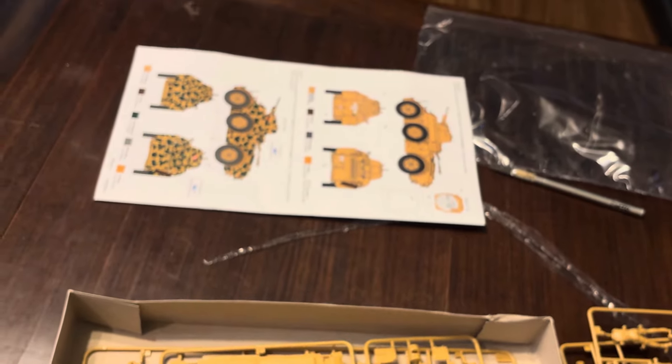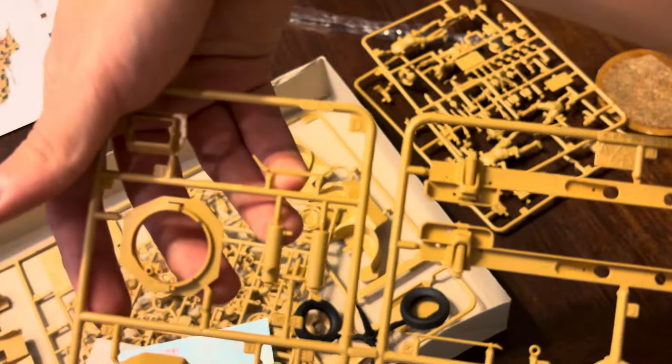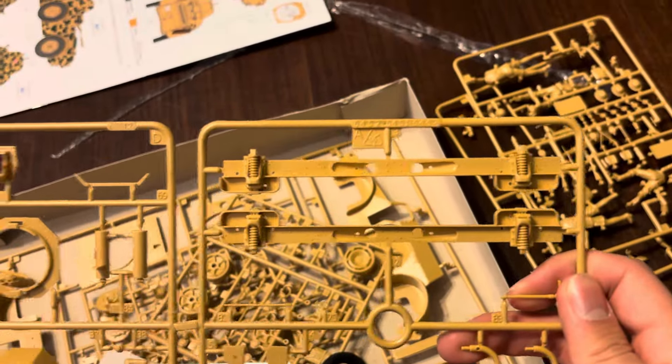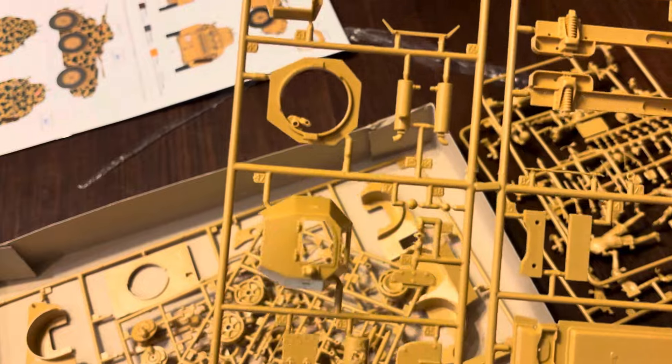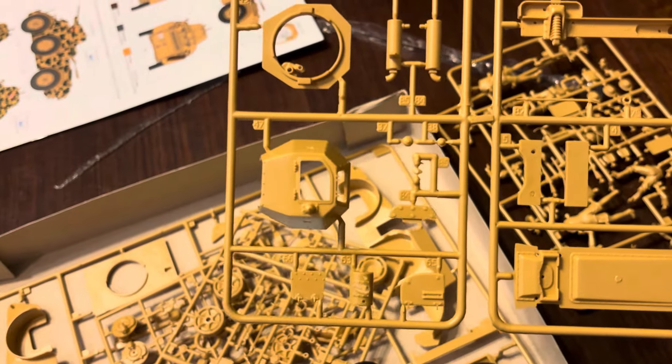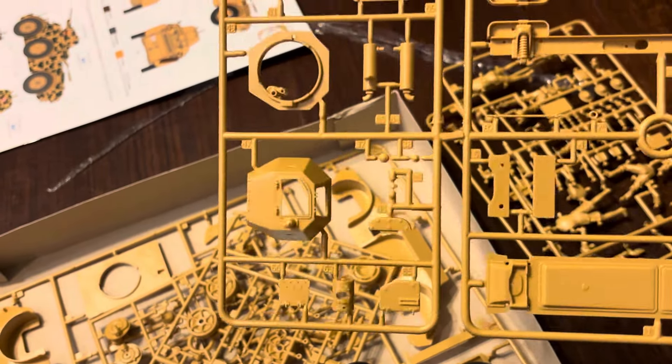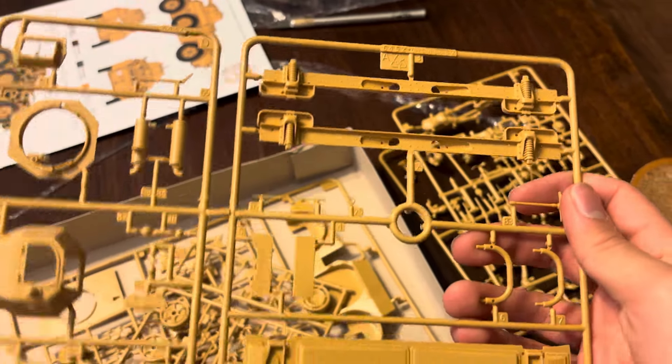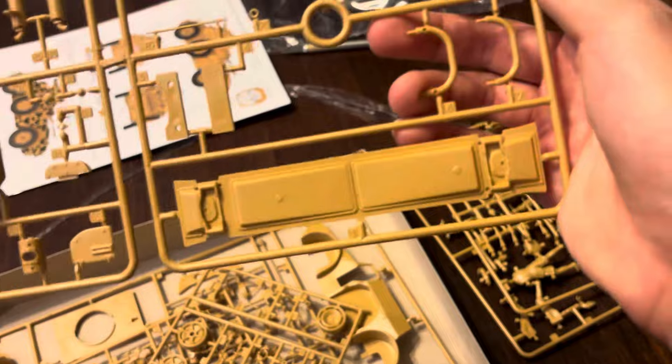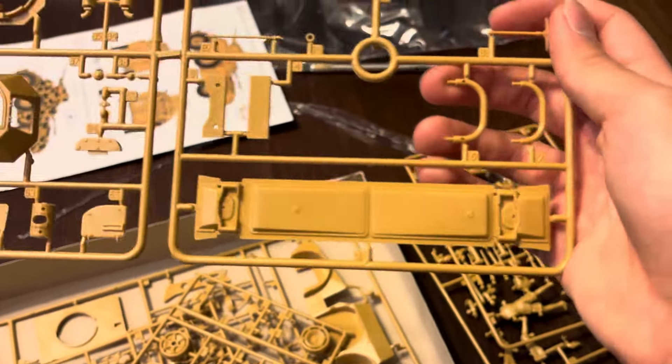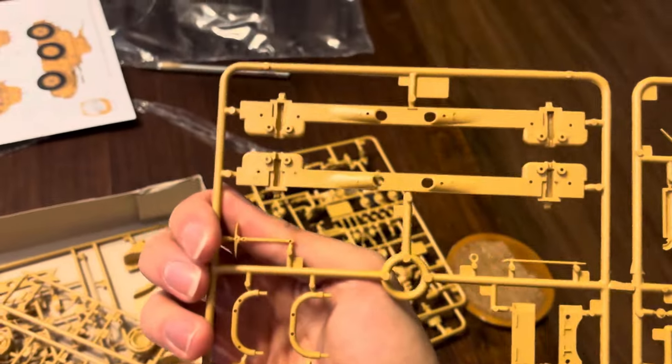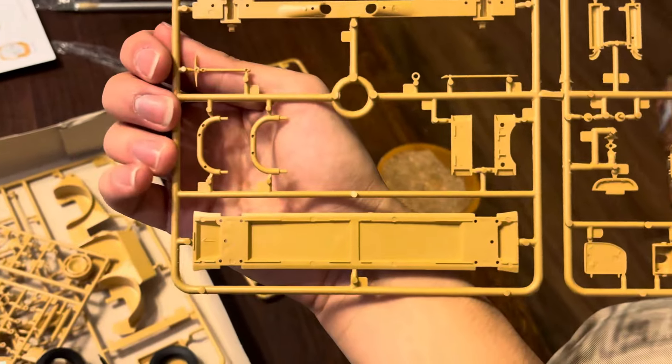First tree of the actual kit is tree A and tree D. Tree D has the turret and mufflers with the mantlet. Tree A has springs, probably for the wheels I'm guessing. I'm not too keen on car parts.